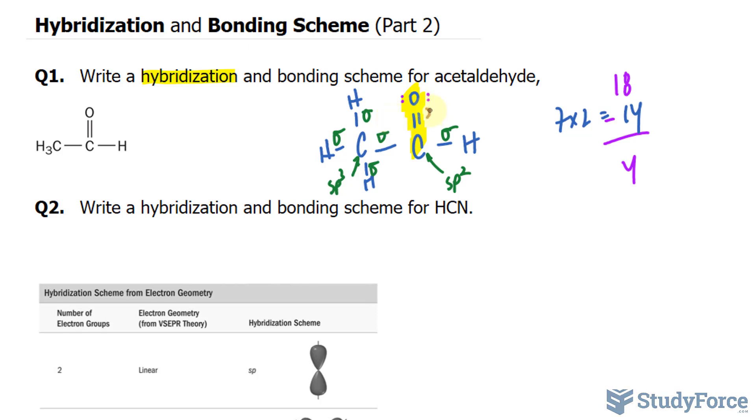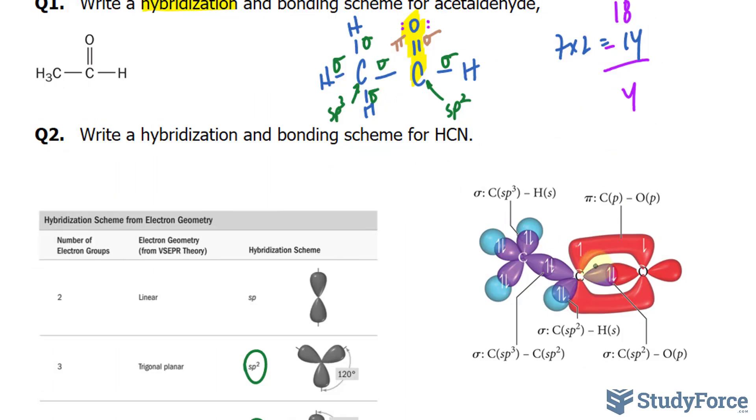So we have a sigma bond and a pi bond. To give you a better visual of what's happening, take a look at this illustration. Notice that these electrons being shared are found in orbitals oriented directly towards each other.